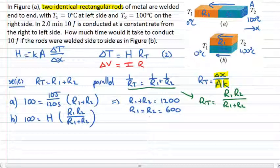Now that I've got that, I know everything about the thermal resistance of my composite system when it's parallel. I can write down that 100 equals H multiplied by 600 times 600, which is 360,000, and 600 plus 600 is 1200.